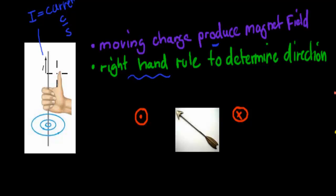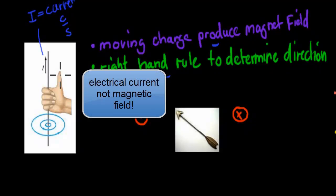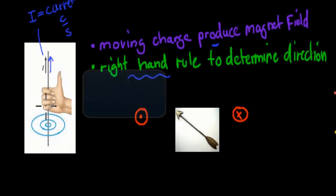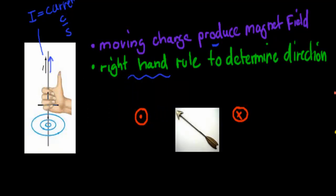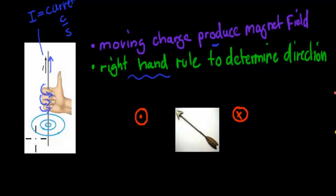With the right-hand rule, put your thumb in the direction of the current flow — in this case, the thumb would be pointing upwards — and then wrap your fingers around the actual conductor. The direction your fingers curl determines the direction of the magnetic field. So this would be the direction, and you can see here this same magnetic field gives you the same idea, moving from here to here.